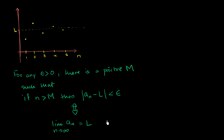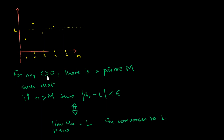Then we can say that the limit of a sub n as n approaches infinity is equal to L, and we can say that a sub n converges to L. So let's parse this. Here I was making the claim that a sub n is approaching this L right over here, drawn as a horizontal line. This definition of what it means for a sequence to converge says: for any epsilon greater than 0...